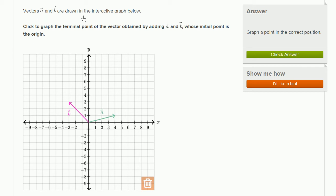Vectors A and B are drawn in the interactive graph below. Click to graph the terminal point of the vector obtained by adding A and B, whose initial point is the origin. So we want to add A and B.